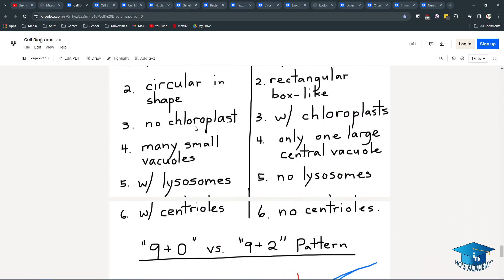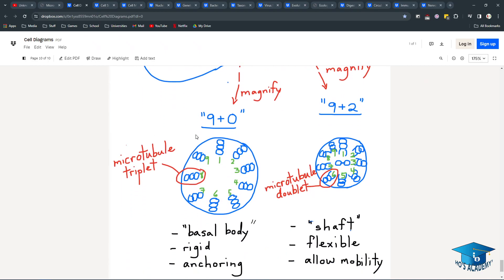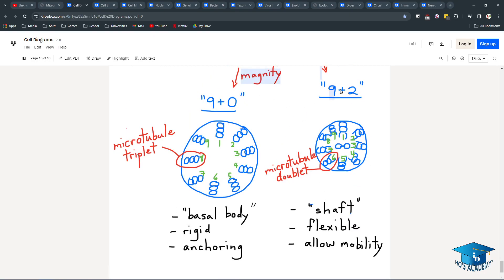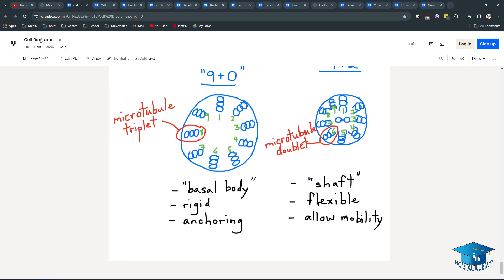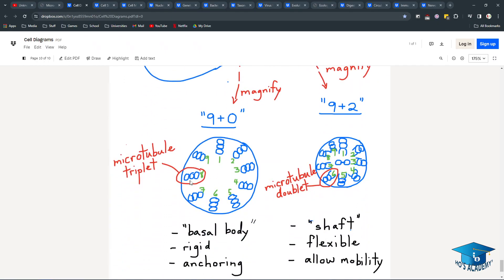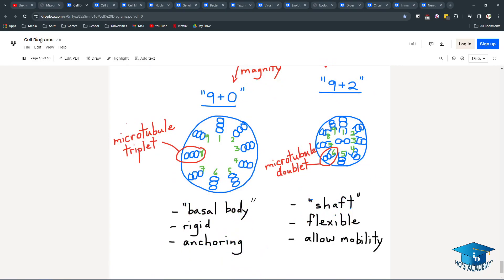This is another compare and contrast, and this is important: the 9 plus 0 and the 9 plus 2 microtubule pattern. This is the example of a sperm cell. These are basal bodies from centrioles. The basal body has 9 plus 0, so there are triplets in a set of 9. The difference is that 9 plus 2 means they have one open set, kind of looking like an ant, and there's 2 in the middle. These are flexible and allow for mobility, like a sperm cell flapping around. And these are more rigid due to their triplet structure and they're used for anchoring. I think 9 plus 0 is used in spindle fiber formation during mitosis.